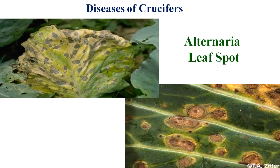Looking carefully at the symptoms, this kind of ring spot is known in pathological scientific language as a concentric ring spot. As you can see in your manual, this concentric ring spot arises on the surface of the leaf and scatters all over the leaf lamina.